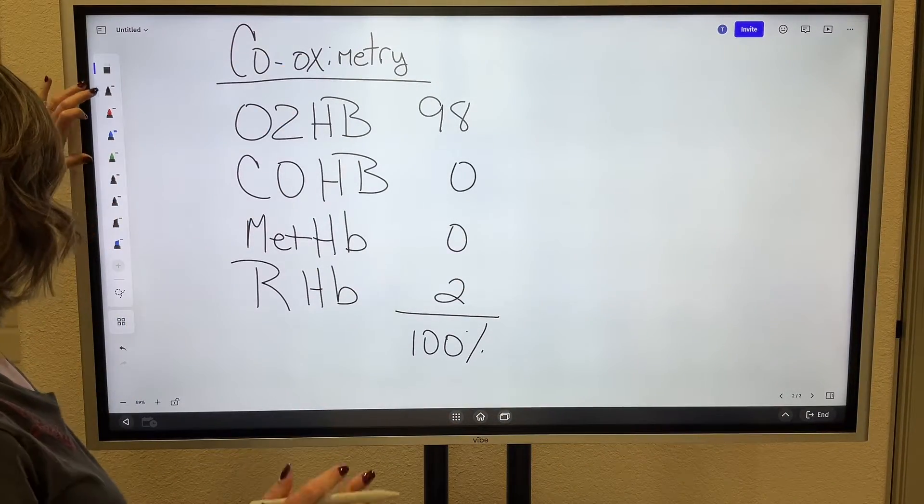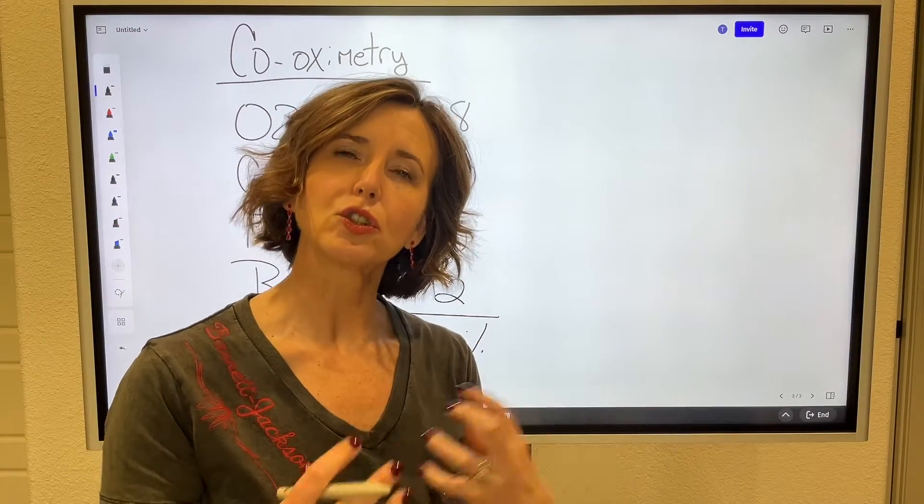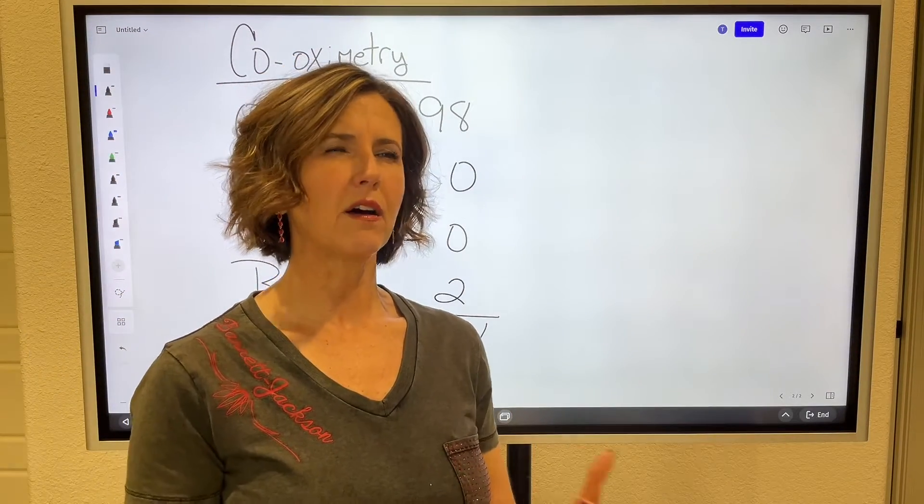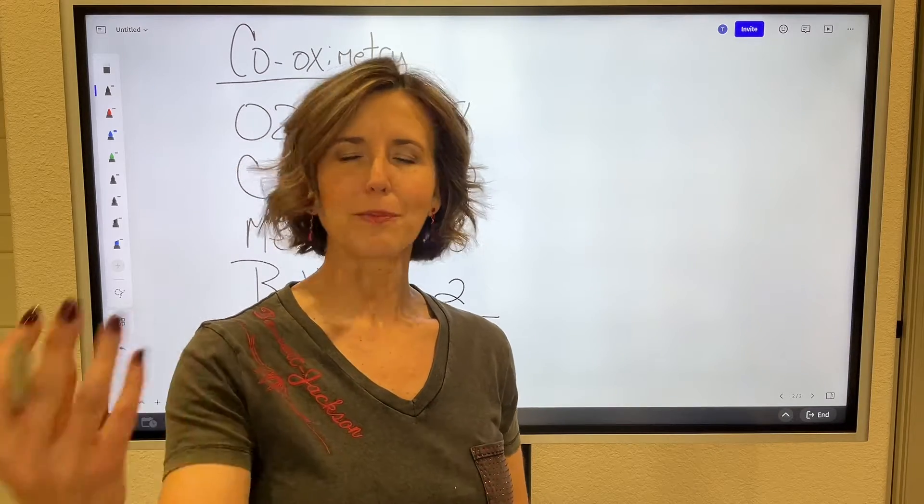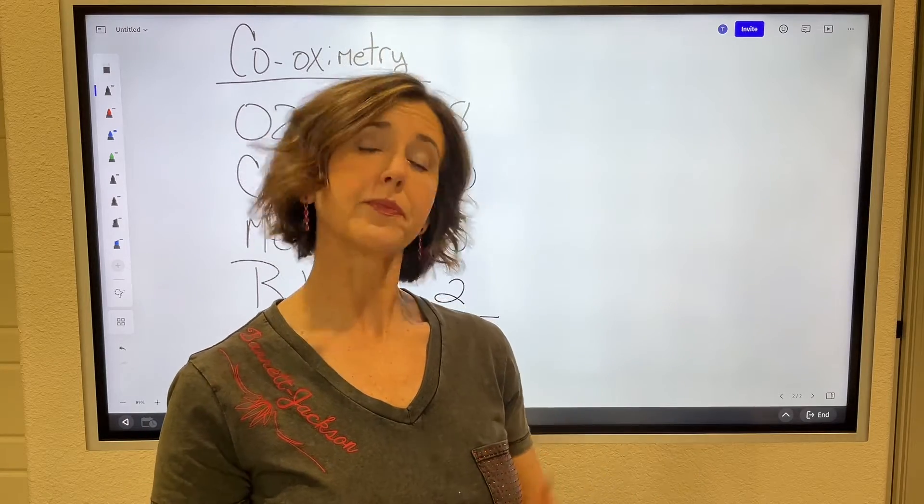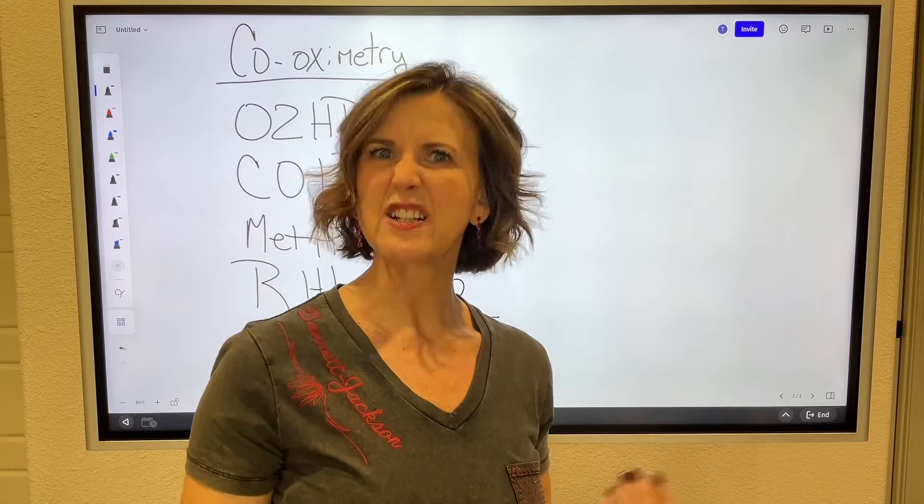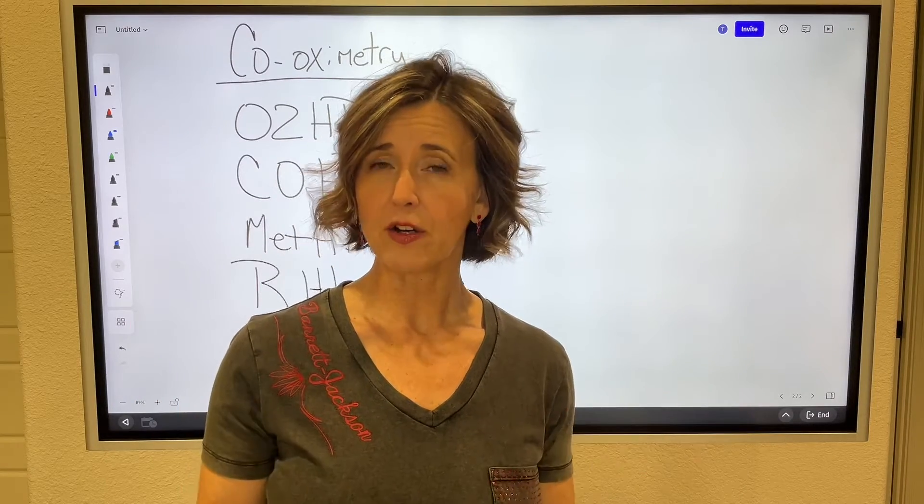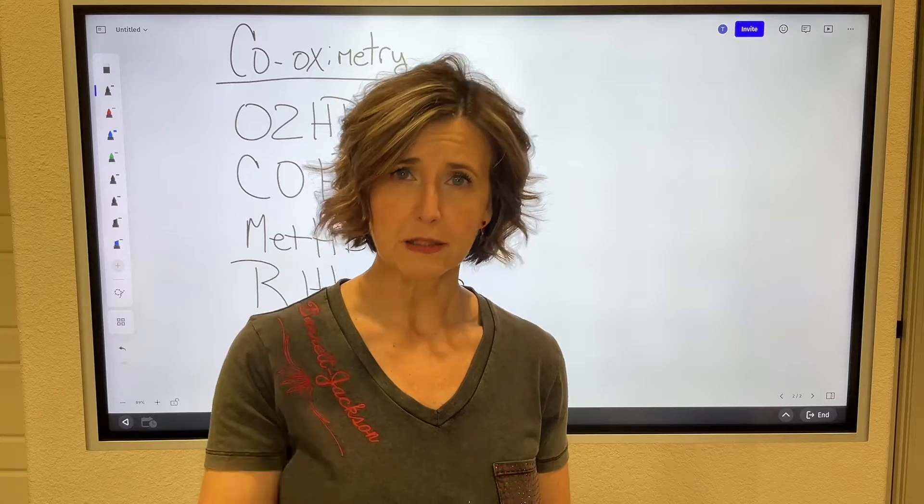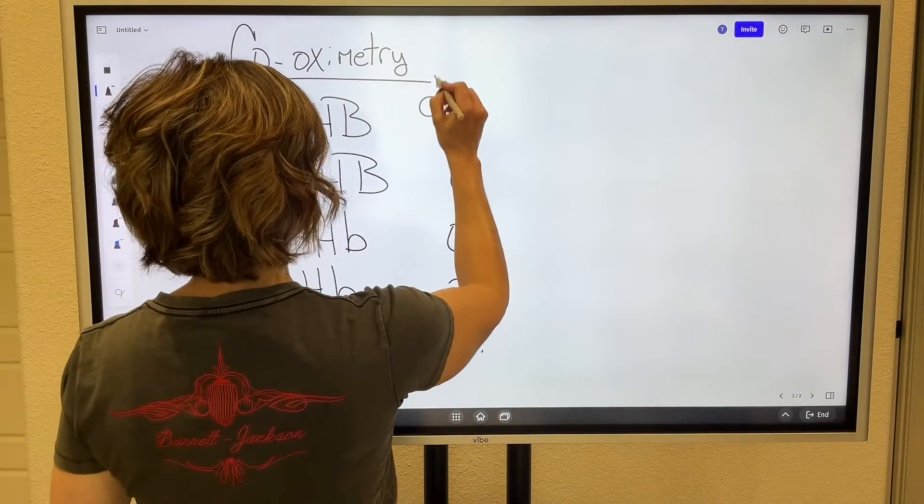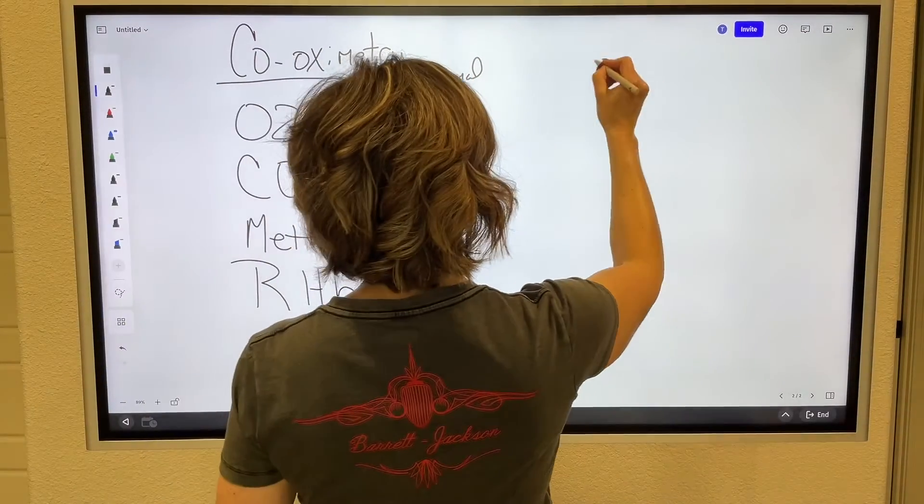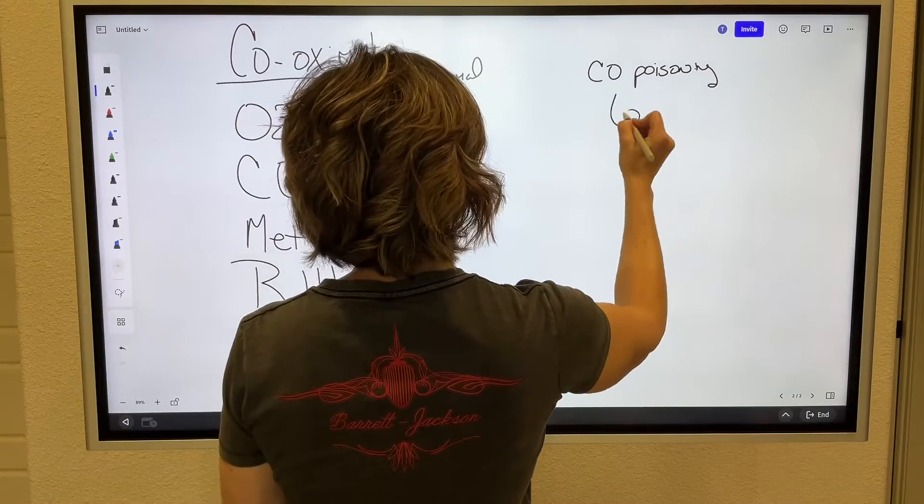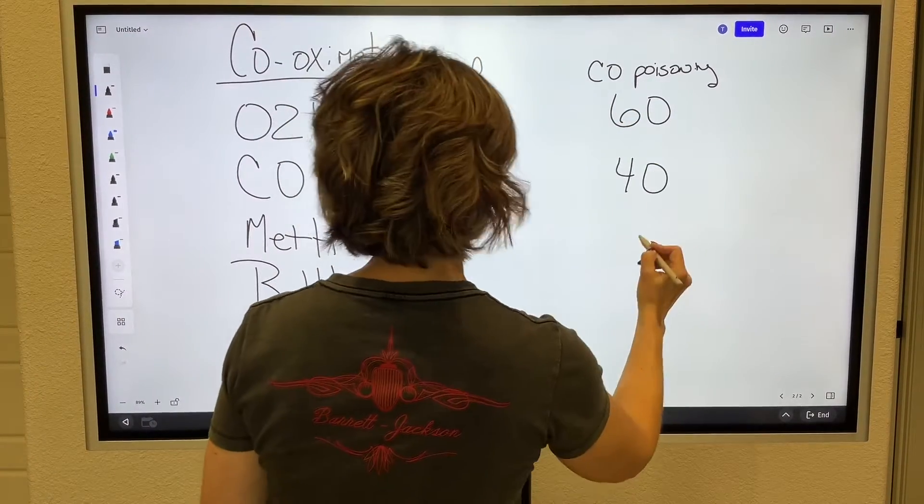Where we begin having problems is if a patient has a certain exposure to something. For example, if somebody is exposed to carbon monoxide, this can be, oftentimes on the test, it is a firefighter pulled from a burning house fire or somebody in a house fire. It also can be suicide attempts, a car running in a garage, that type of thing. Anytime there's any type of incomplete or unclean burn in a fire, smoke inhalation, something like that, you should expect carbon monoxide poisoning.